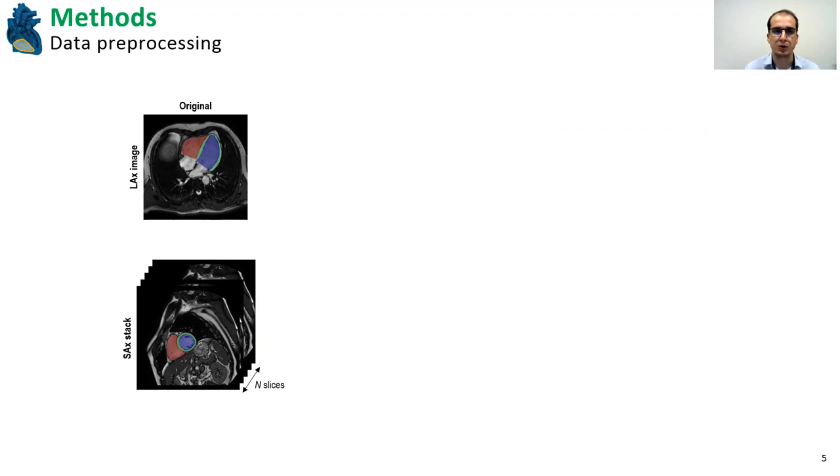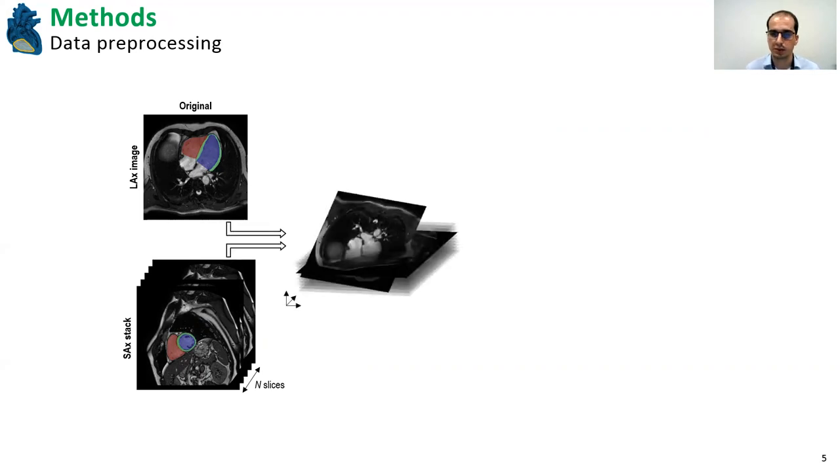And so what I propose is to transform these images during the preprocessing stage to a unified or a common 3D space using the information provided by the DICOM and then to compute three things: an average centroid position that corresponds to the average between the center of the long axis image and the center of the short axis stack; I identify the Z axis of the short axis stack and the X axis of the long axis image. And I use this information to transform the two images to a canonical pose in which we know the orientation of the heart and we have a correspondence between the axis of both images.